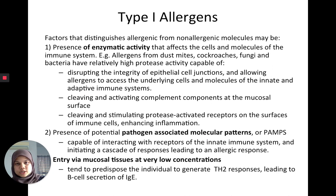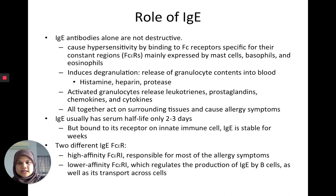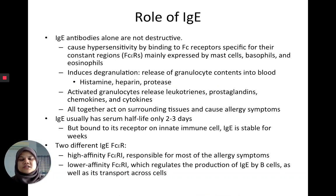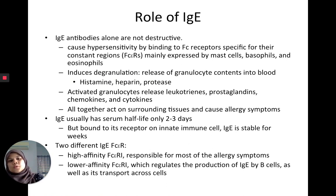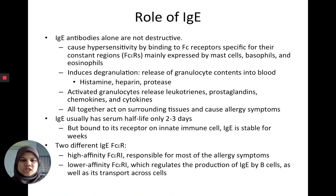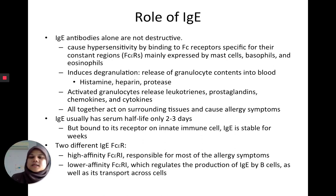If allergens enter via mucosal tissue at very low concentrations, they tend to produce a Th2 response which causes IgE production. IgE antibodies are not inherently destructive — that's how we deal with parasites — but they can cause hypersensitivity when they bind to Fc receptors expressed on mast cells, basophils, and eosinophils. When this happens, they induce degranulation, meaning the granulocytes release their contents such as histamine, heparin, and proteases into the blood. Activated granulocytes also release leukotrienes, prostaglandins, and other cytokines, which wreak havoc on surrounding tissues causing allergy symptoms.